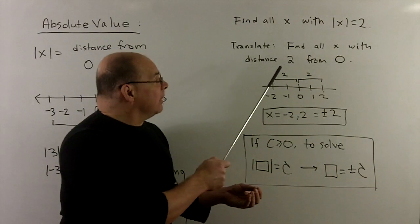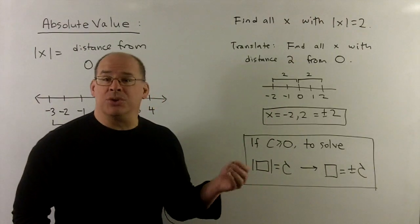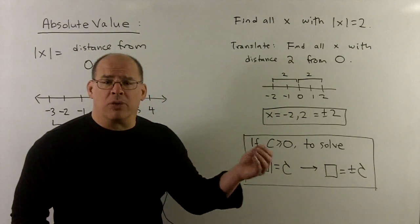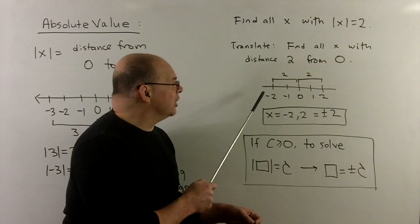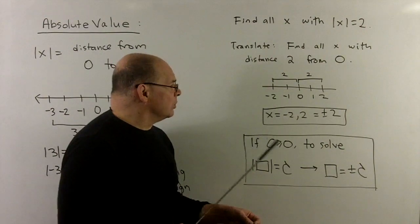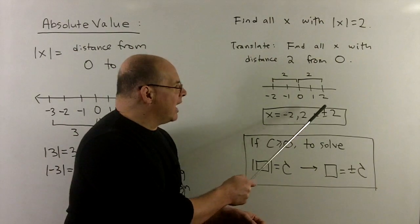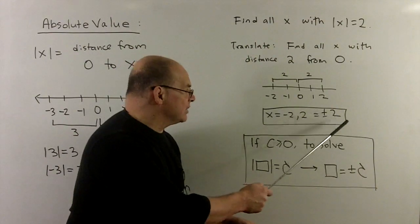So if I draw the real number line, I pin down 0, I go 2 in either direction. We note we have two solutions, minus 2 and 2, or we can write that as single item plus minus 2.